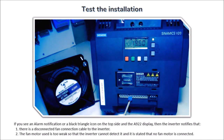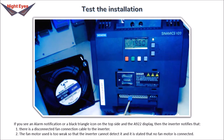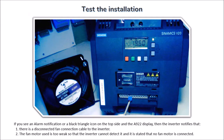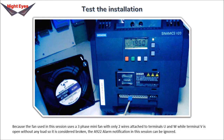If you see an alarm notification — a black triangle icon at the top and the A922 display — the inverter is notifying that: 1. there is a disconnected fan cable, or 2. the fan motor is too weak for the inverter to detect. Because the fan in this session is a three-phase mini fan with only two wires attached to terminals U and W while terminal V is open, the A922 alarm notification can be ignored.